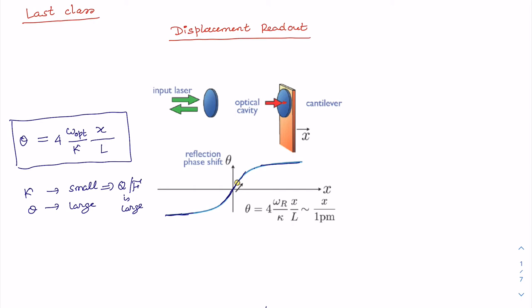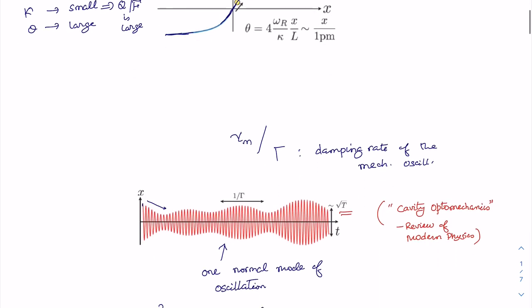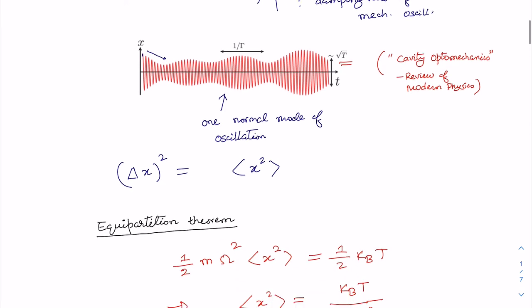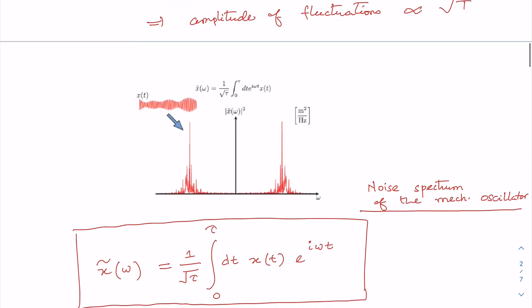In the last class we discussed how one can obtain information about what's going on inside the cavity by the so-called displacement readout. As the optomechanical system is an interferometer, it is easy to measure the phase shift suffered by the circulating light inside the cavity. The phase shift is dependent on displacement and inversely proportional to the cavity decay rate kappa. Measurement of phase shift leads to the displacement versus time plot, which can give us an idea about the temperature of the harmonic oscillator from the amplitude of fluctuation.